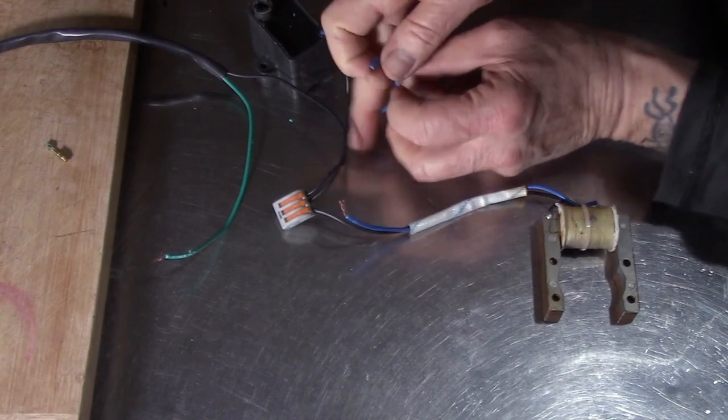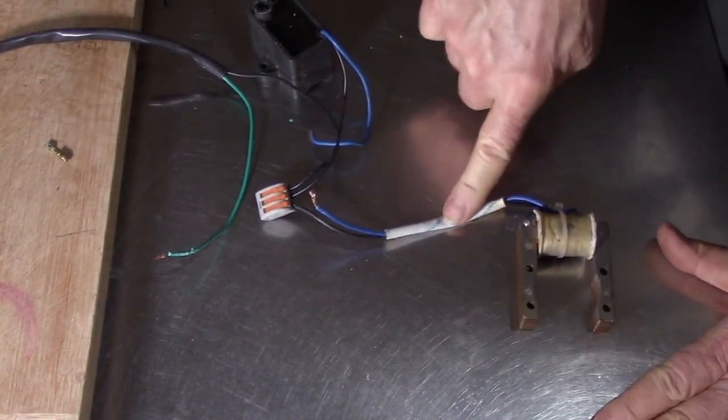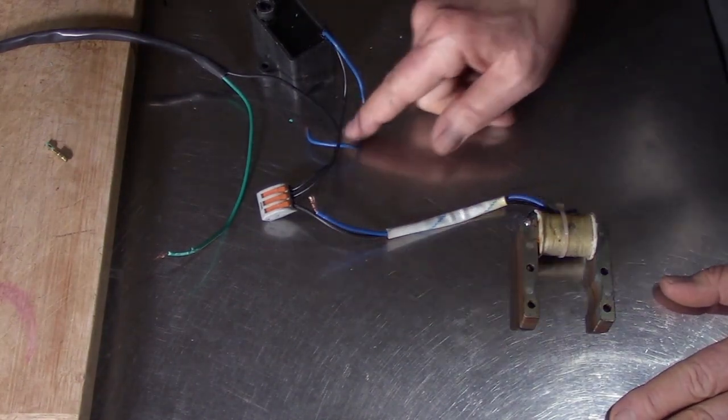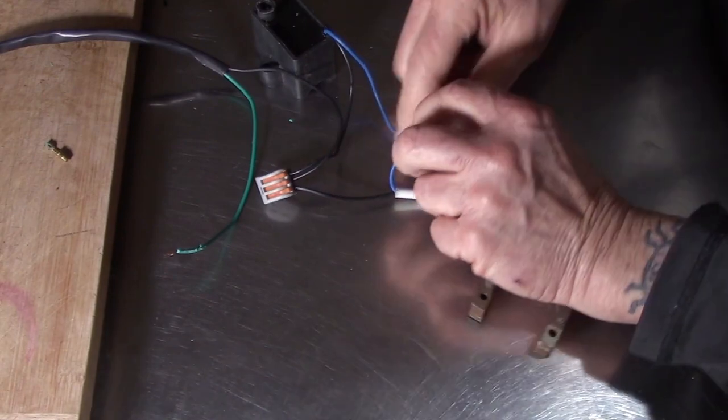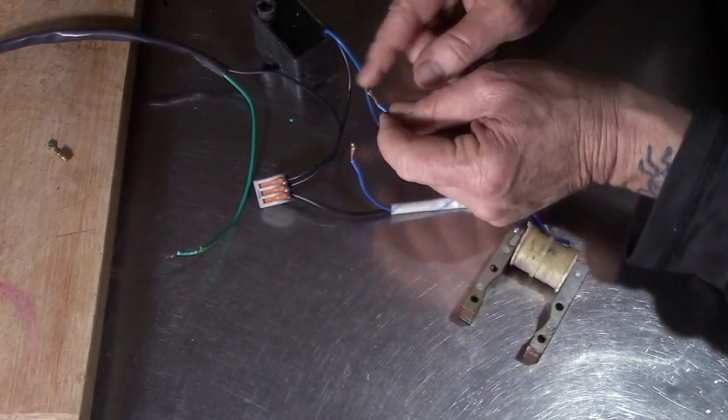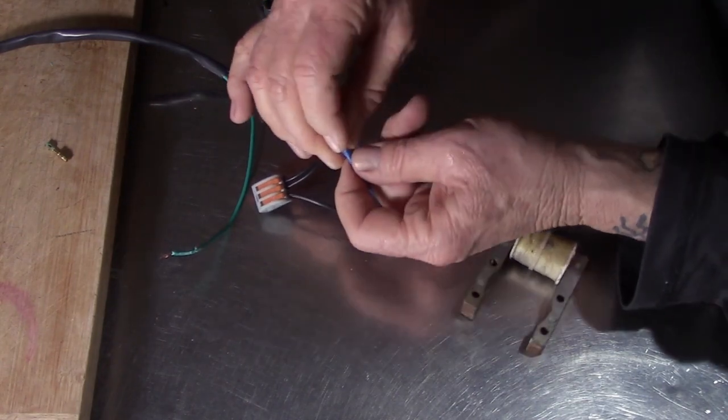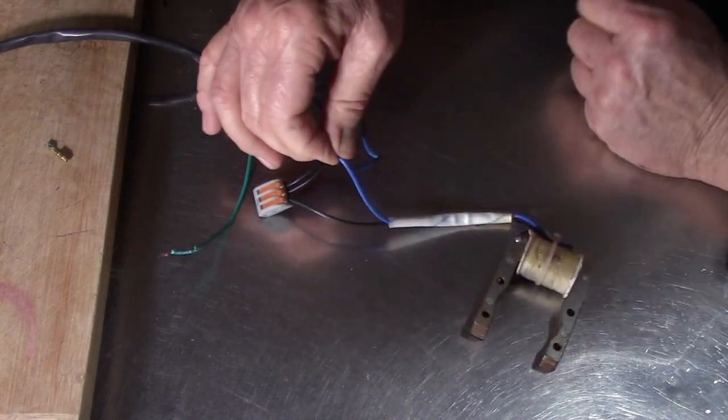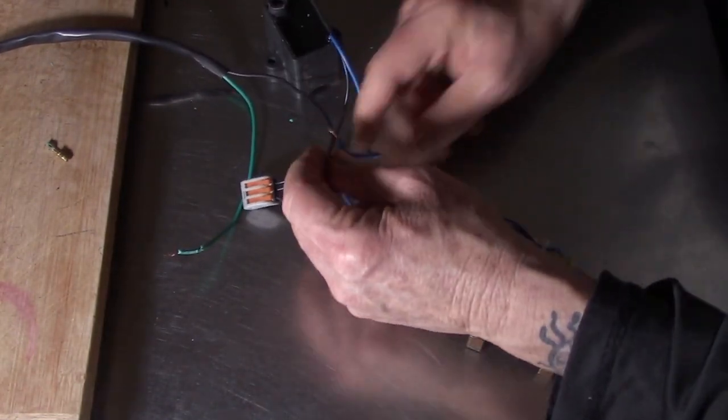Now, some of the quote unquote high performance magnetos or CDIs have a red wire. That's the only difference. They all have the black wire in common, so it's going to be black to black, and if you have a red wire on your magneto and a blue wire on your CDI, the red and the blue will go together, or red to red, or whatever, any combination there about. The black one is what must stay together there.